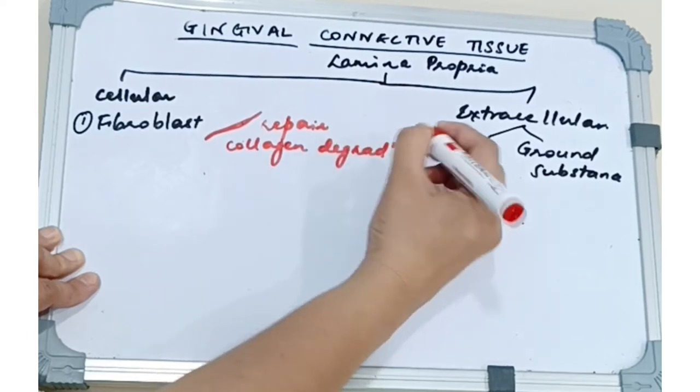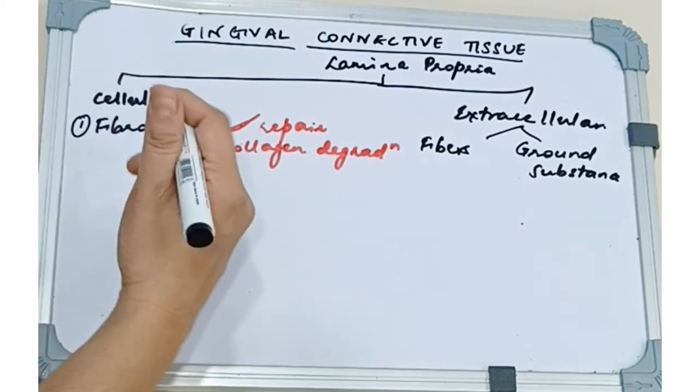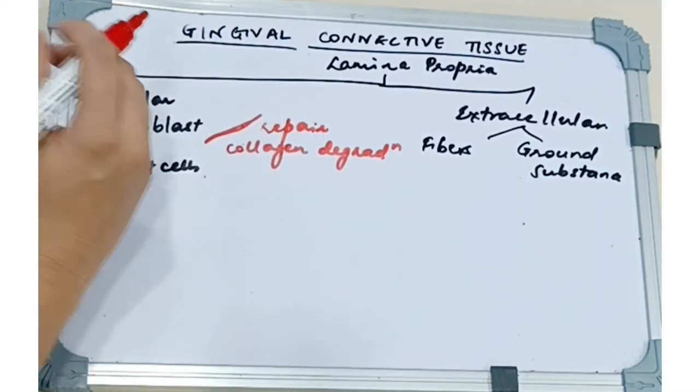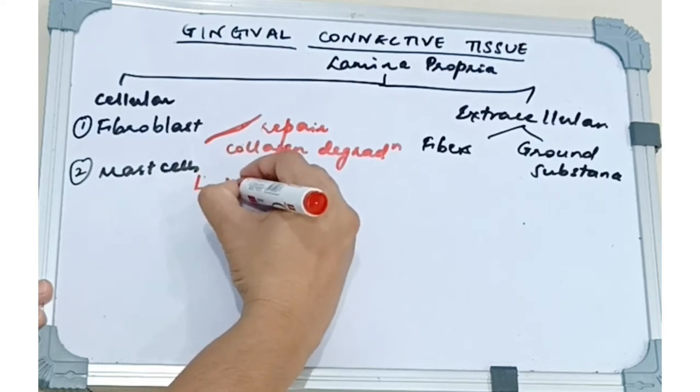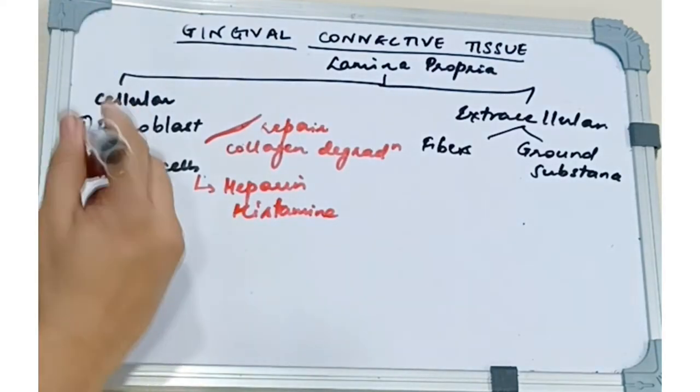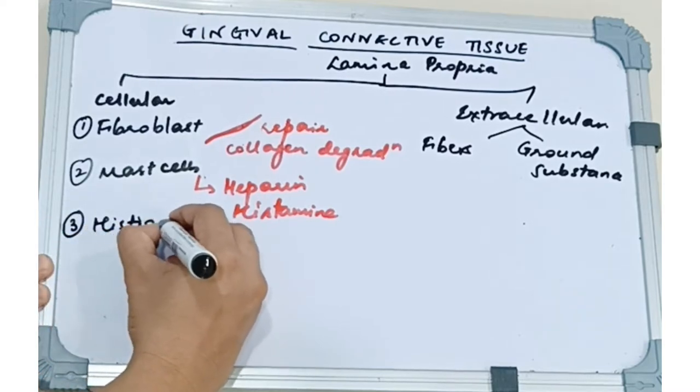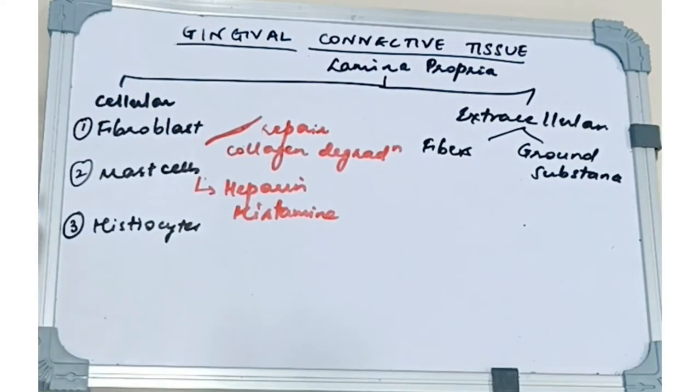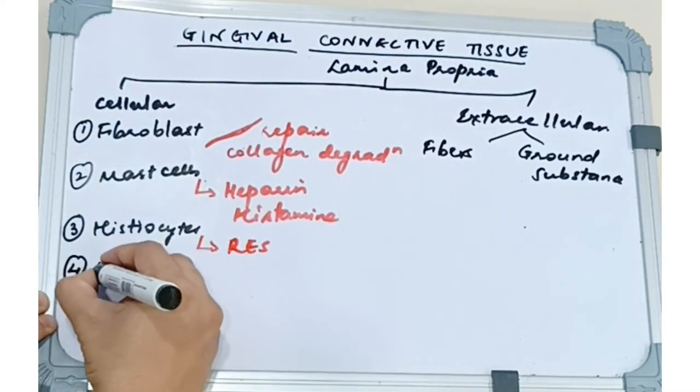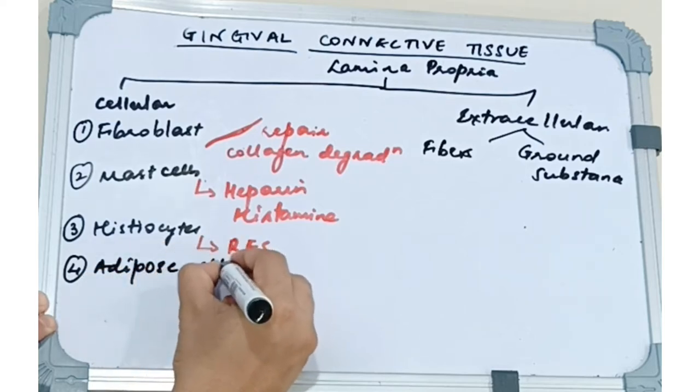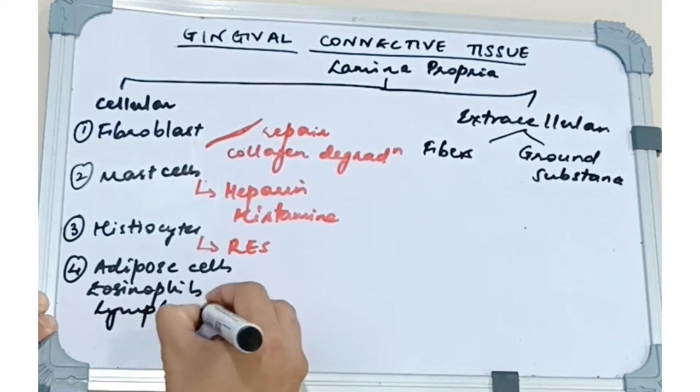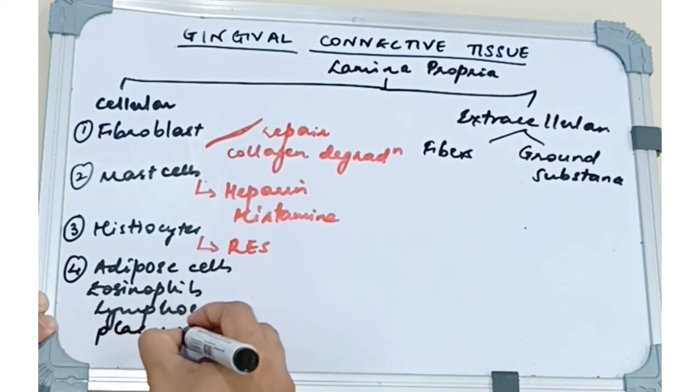Next we have the mast cells. Now these cells are present throughout the body and the gingiva and are numerous in the connective tissue of the mucosa. These produce heparin and histamine. Next we have the fixed macrophages also known as histiocytes. These are components of the mononuclear phagocyte system or the reticular endothelial system. These are derived from monocytes. The gingival connective tissue also contains adipose cells, eosinophils, lymphocytes, and plasma cells.